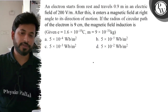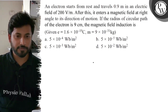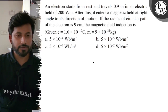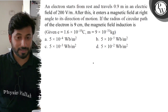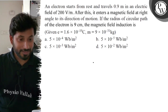An electron starts from rest and travels 0.9 meter in an electric field of 200 volt per meter. After this, it enters a magnetic field at right angle to its direction of motion. If the radius of circular path of the electron is 9 centimeter, find the magnetic field induction.